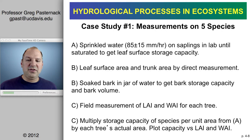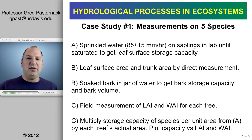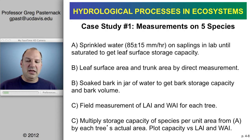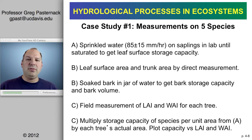They also measured leaf surface area and trunk area — the woody area — by direct measurements. Then they took samples of bark, weighed them when dry, put them in a jar of water for a long time, and weighed them again to get the wet weight. The difference gives the wet storage capacity of the bark. They also made field measurements of the leaf area index and the woody area index — the one-sided area of branches and stem.